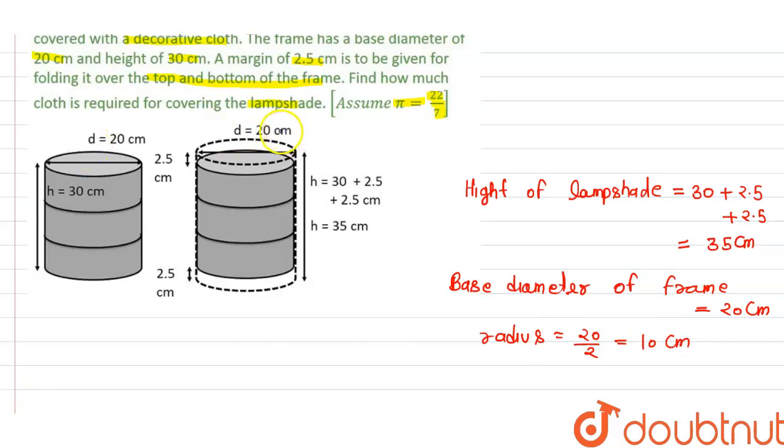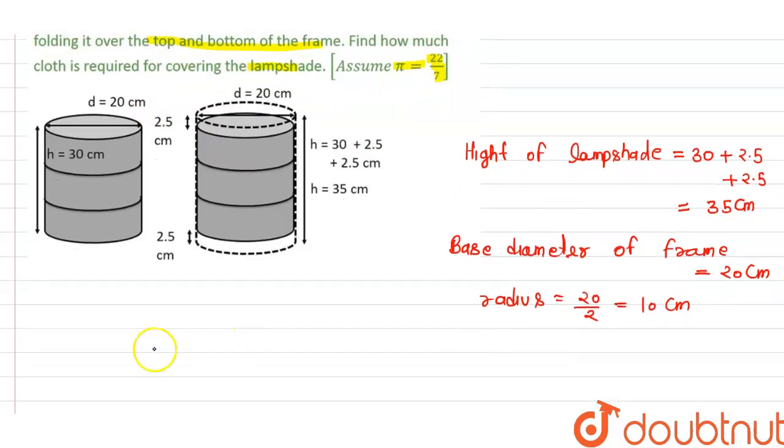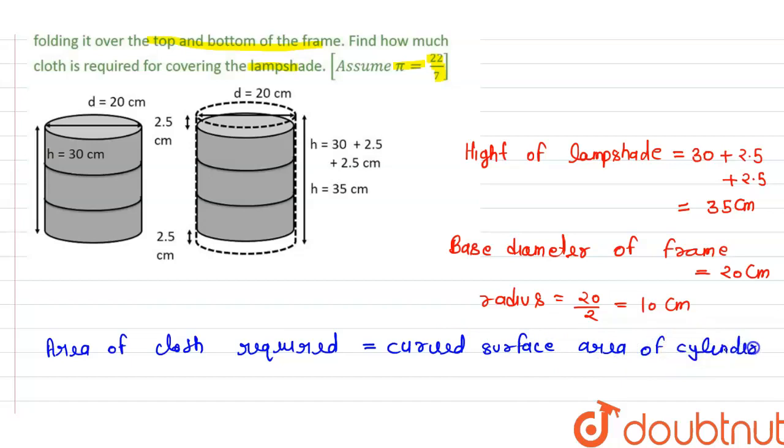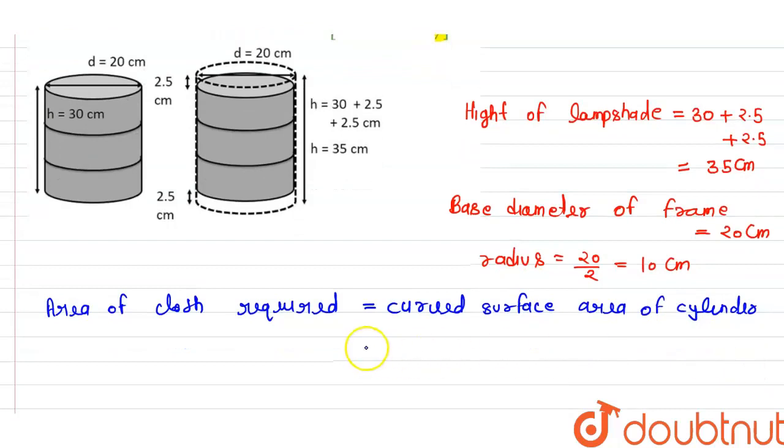Here we have to find the area of cloth required for covering the lampshade. The area of cloth required will be the curved surface area of a cylinder.